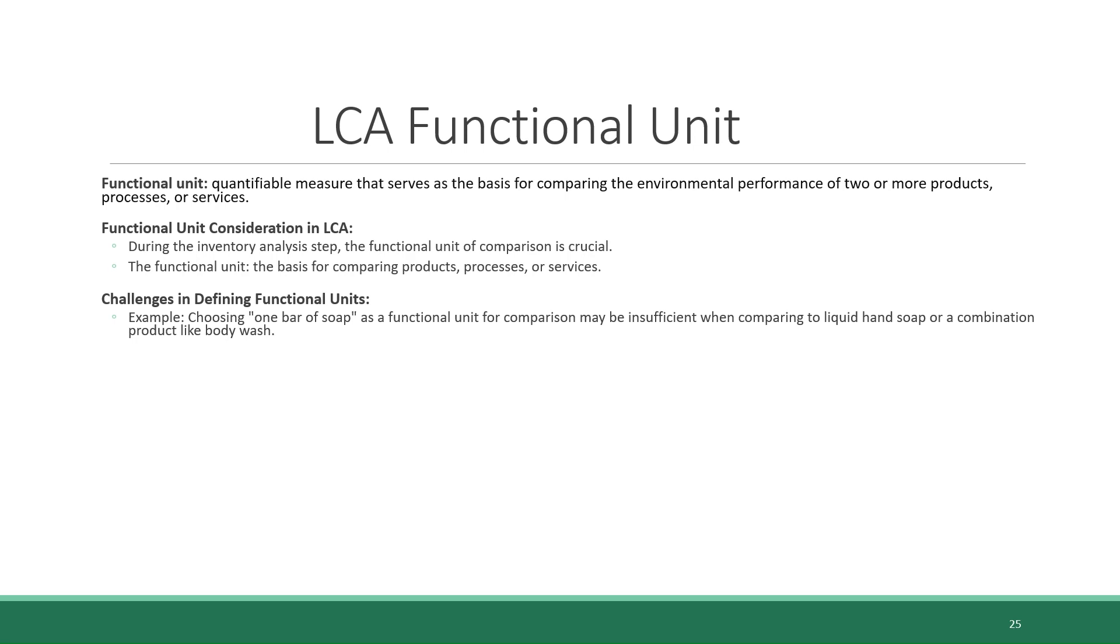Defining a functional unit may seem like a straightforward task, but it can pose significant challenges. For instance, choosing one bar of soap as a functional unit for comparison may not be adequate when comparing it to liquid hand soap or a combination product like body wash. Considering alternative functional units is necessary. Suggestions include using number of washings as a functional unit or considering the concentration of cleaning agent per average use.